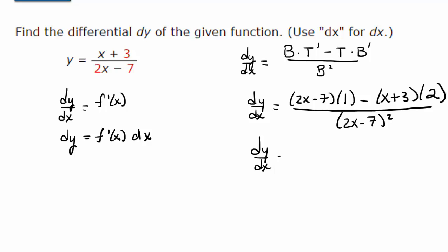So dy dx is equal to, we would distribute and combine like terms. Here we have 2x minus 7, and here we distribute the negative and the 2. That's going to give us negative 2x minus 6. 2x minus 2x cancels, and we've changed it to a plus when we distributed the negative. So negative 7 plus negative 6 is negative 13. So we have dy dx is negative 13 over 2x minus 7 quantity squared.